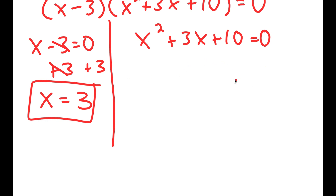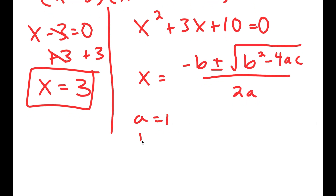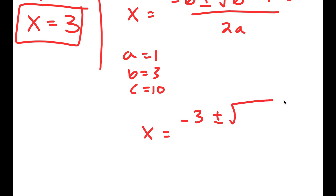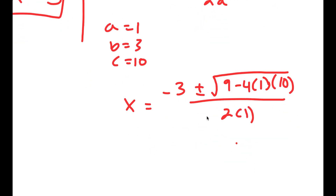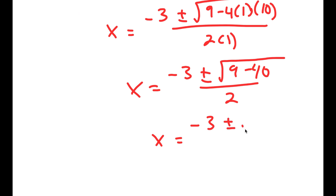For x squared plus 3x plus 10 is equal to 0, this is a quadratic equation, meaning I can use the quadratic formula to solve this. Recall that the quadratic formula is negative b plus or minus the square root of b squared minus 4ac all over 2a. In this case, a is 1, b is 3, and c is 10. So I get x is equal to negative 3 plus or minus the square root of 3 squared, which is 9, minus 4 times 1 times 10, all over 2 times 1. This is equal to negative 3 plus or minus the square root of 9 minus 40 over 2, which is negative 3 plus or minus the square root of negative 31 over 2.